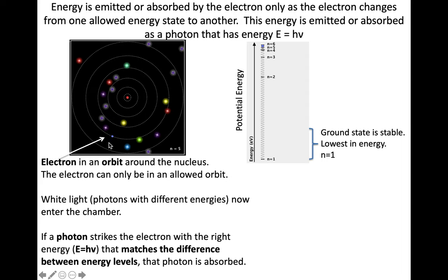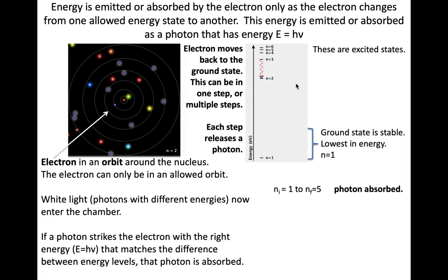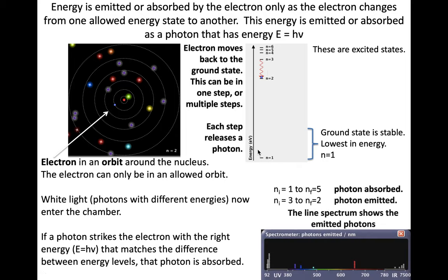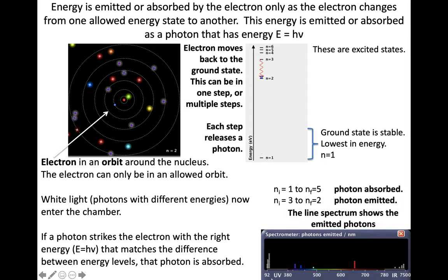Within Bohr's model, energy can be absorbed or emitted as the electron moves from one energy state to another. Within this representation, we have photons of light interacting with the electron and making it move from one energy level to another one. And we see within our representation here in terms of the energy, it can move from a lower energy state to a higher energy state if the photon that it absorbs matches that. These were the excited states. And then the electron moves back down. It could be in one step or multiple steps, but it always needs to be on one of these quantized energy levels. Each time it moves downward, it releases a photon. And that's what the line spectrum is recording.